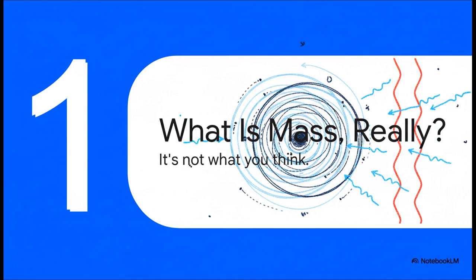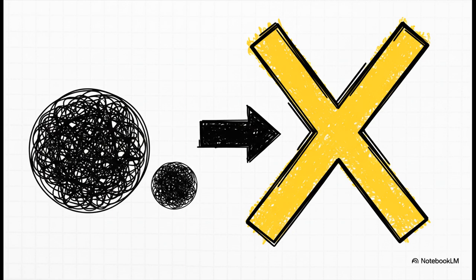We have to challenge this super basic idea of what mass is. It's a word we use all the time, but what does it actually mean? We all learned this in school, right? Mass is just the amount of stuff something's made of. More stuff, more mass. It's simple, it feels right, and as it turns out, it's totally wrong. It's not just a little bit off. It's an idea we need to just toss out.